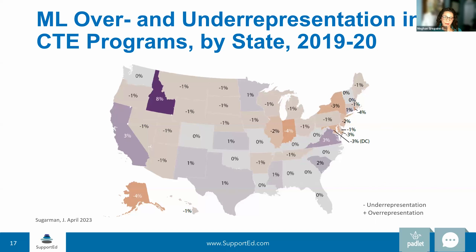Take a moment and look at this map. What takeaways or thoughts do you have? Some questions about specific states that have over- or under-representation — and those are exactly the kinds of questions we'd be asking when looking at this data at our local level. If we notice a large over- or under-representation, that's something important for us to investigate.